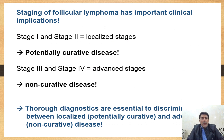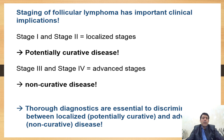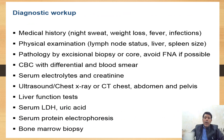Staging of follicular lymphoma has an important and critical application. Stage one and stage two represent localized disease, so there is potentially a curative intent — the patient can be treated. Stage three and stage four represent advanced disease, which is non-curative; the patient will receive symptomatic treatment only. This is why staging is very important.